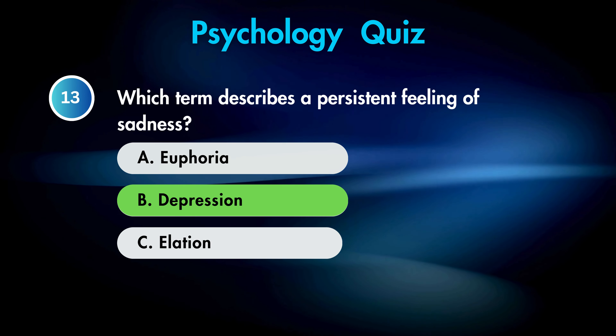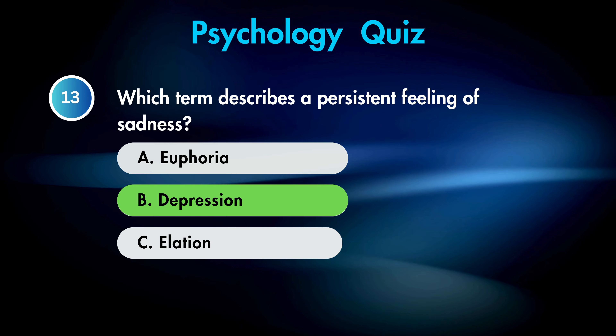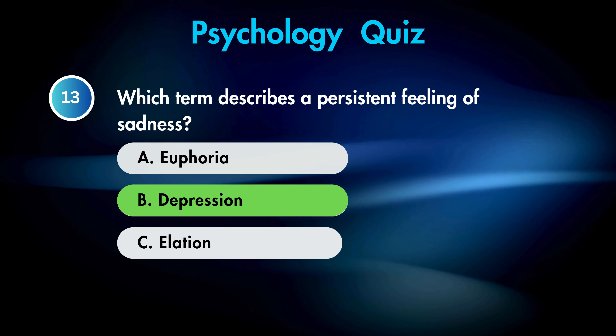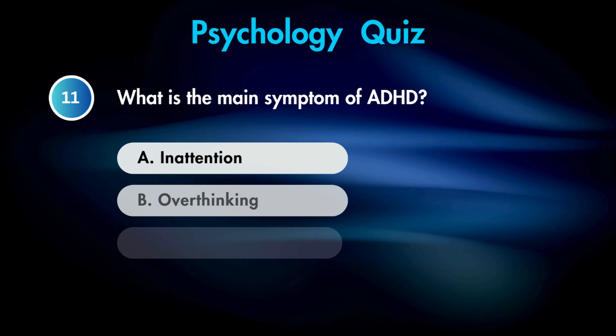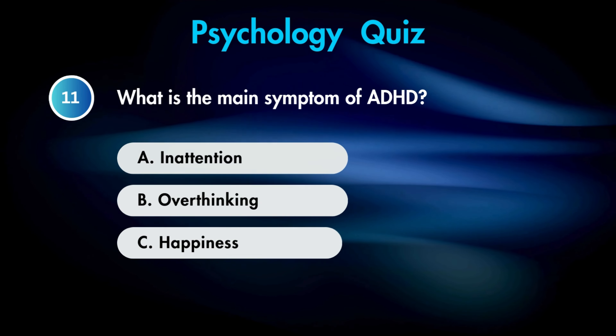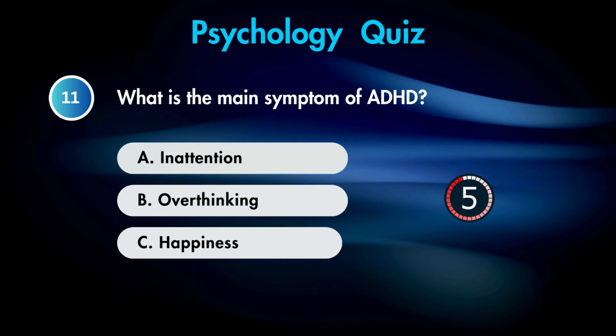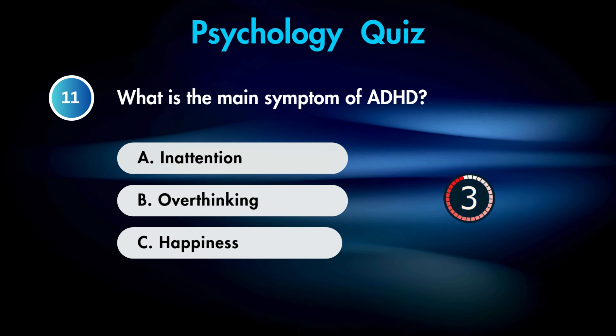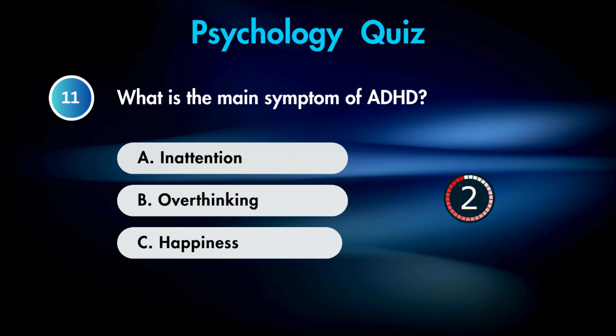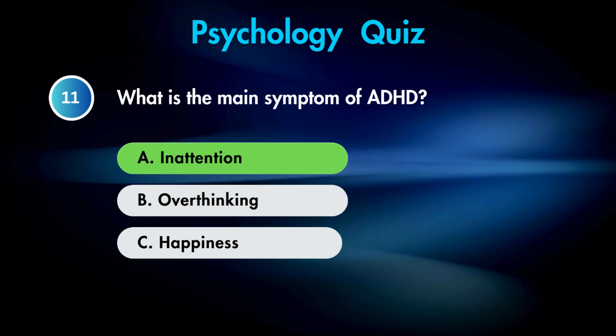What is a common symptom of anxiety? Answer C. Excessive worry.